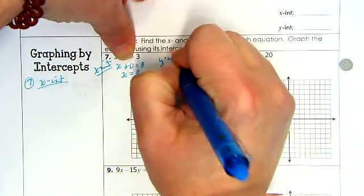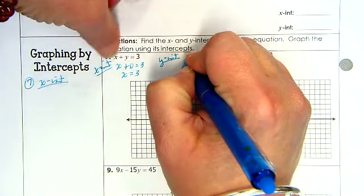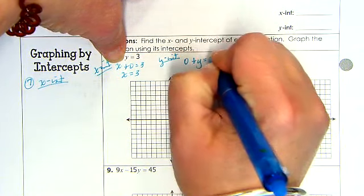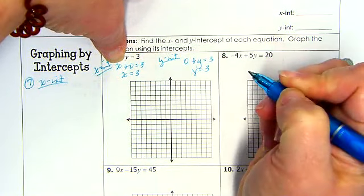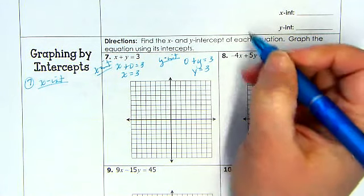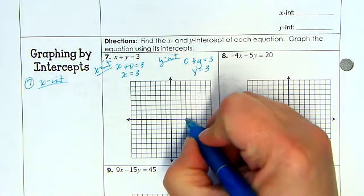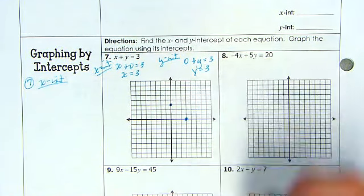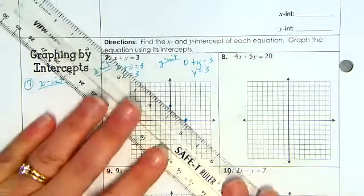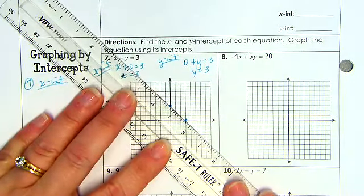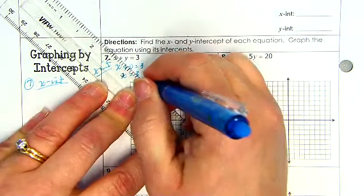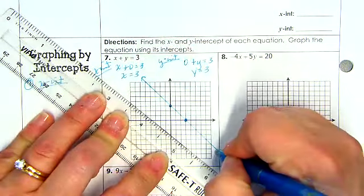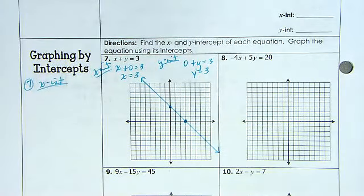Then for the y-intercept, I'm plugging in 0 for x. So that means that goes away. So 0 plus y equals 3. So that gives me y equals 3. And now I graph those two. So I'm going to have the x at 3, the y at 3. And remember, all I have to have is two points to draw a graph. So now I take my handy-dandy ruler, and I connect my dots. And if you want to, you can figure out the slope and continue your graph. But with a ruler, you just now connect the dots, and you make your graph go all the way through.